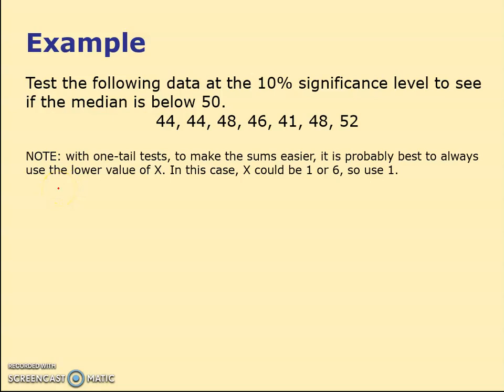New question: test the following data at 10% significance level to see if the median is below 50. H0: median equals 50. H1: median is lower than 50, so it's a one-tail test at 10% significance level. Checking the numbers: below, below, below, below, below, below, and only one above.